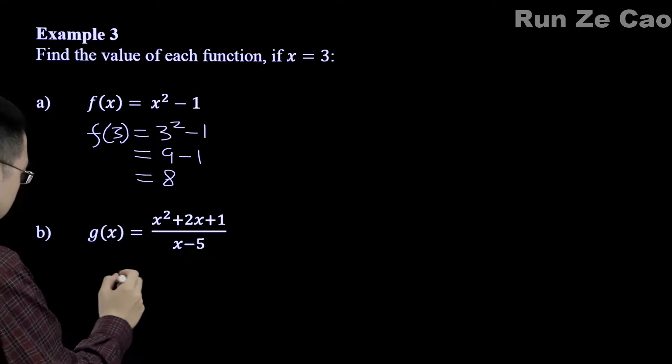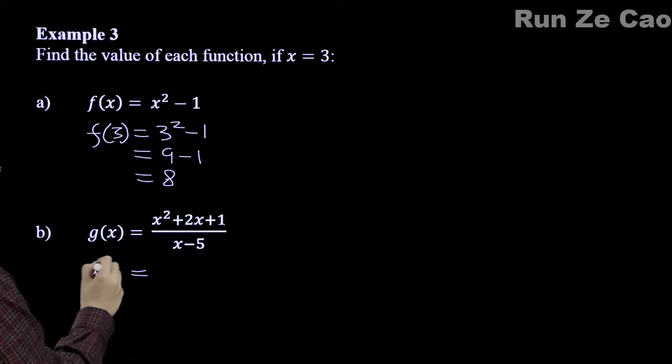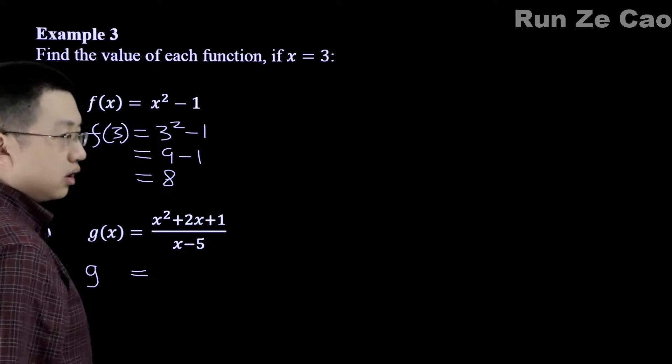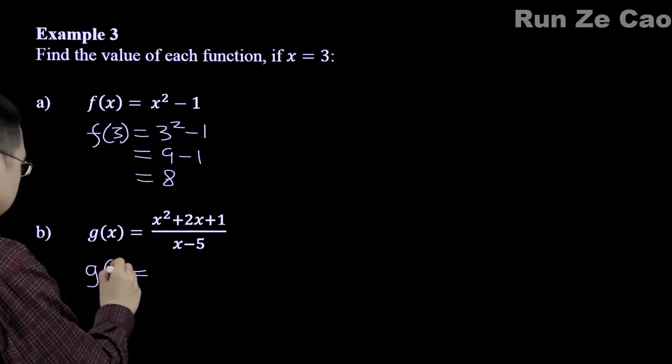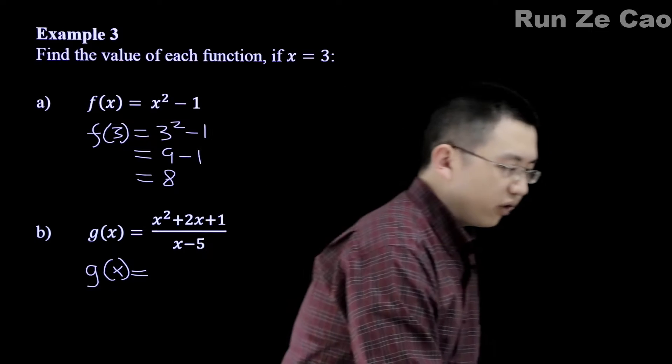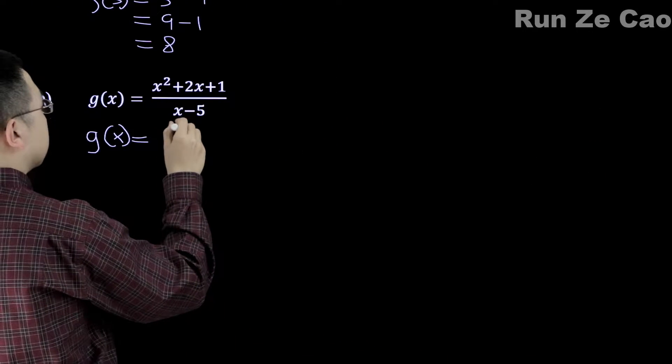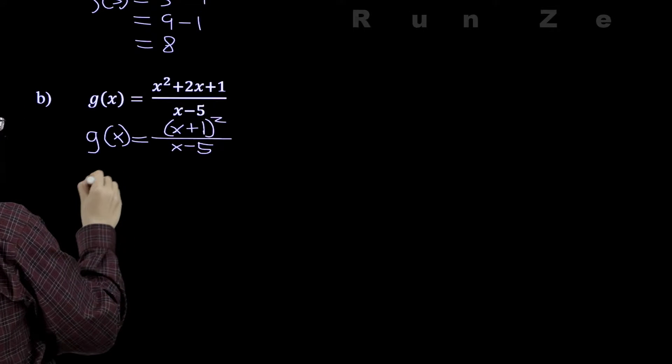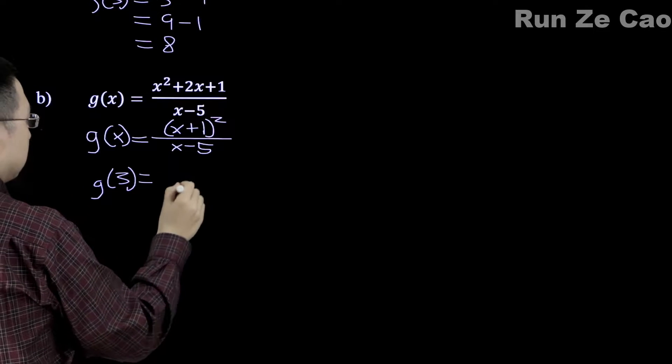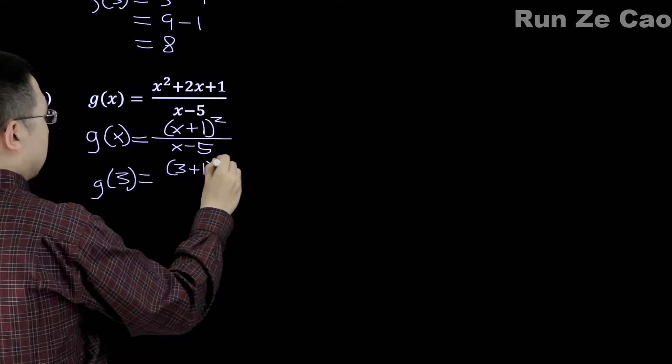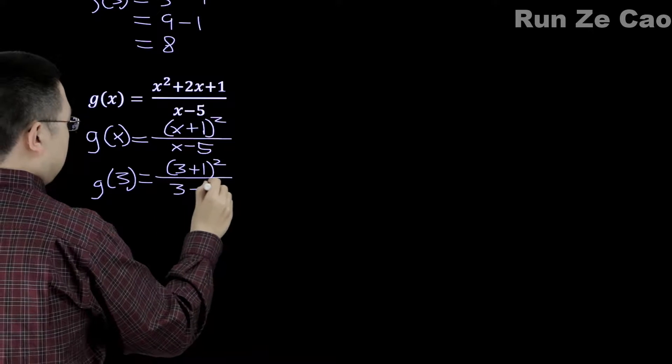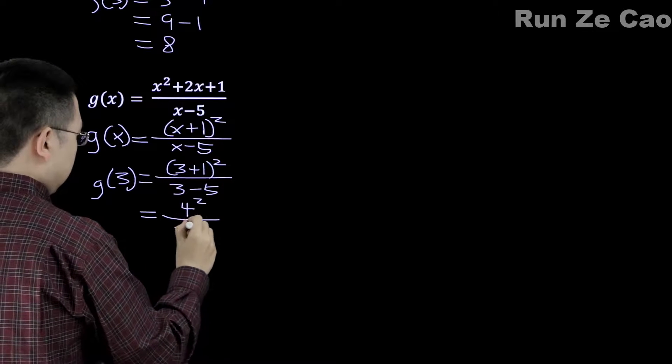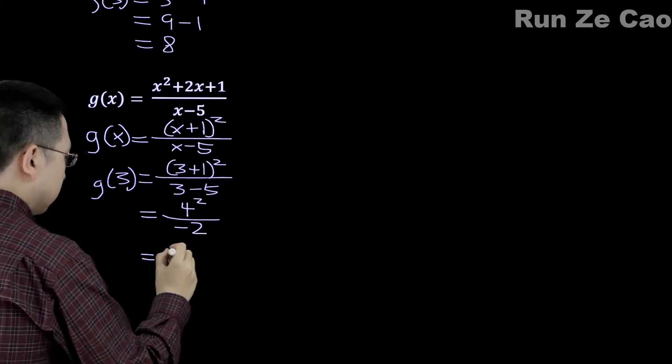Now, what about this one? Yes, it is true that this can be factored to be (x + 1) squared, but that is optional. If we feel like it, we could write that first. So (x + 1) squared over x minus 5 and g(3) would be equal to (3 + 1) squared over 3 minus 5. So that's 4 squared over -2.